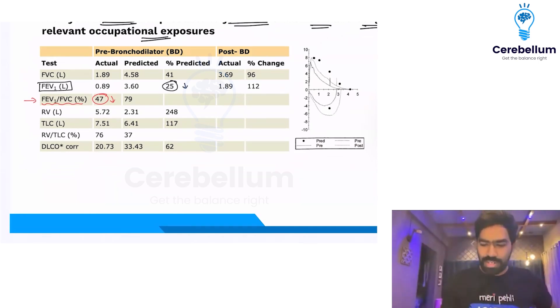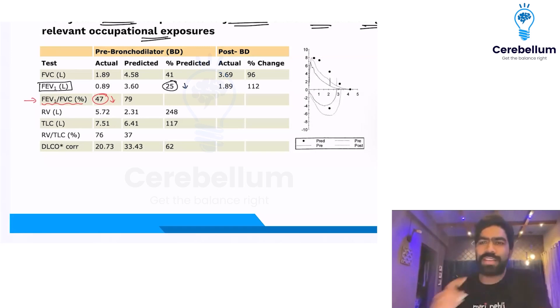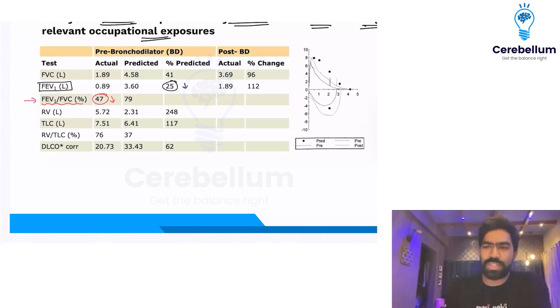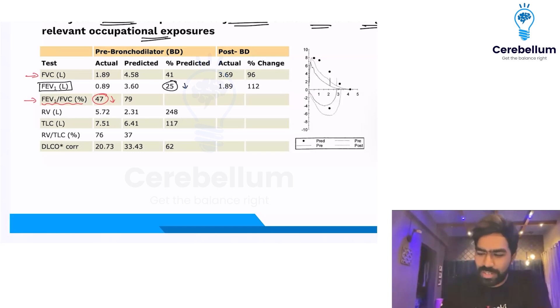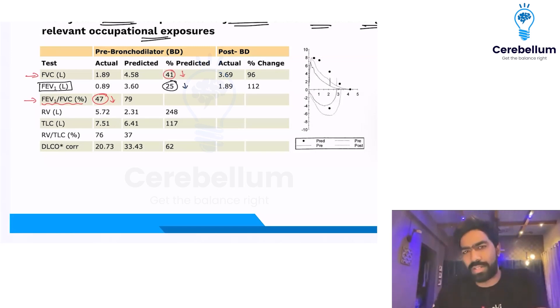If it is an obstructive lung disease, go to the left side of the table. The next step is to look at FVC — forced vital capacity. Step two is always FVC. The FVC percentage predicted here is 41%.